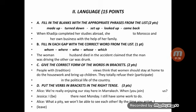Now let's go to the sentence. We have two blank spaces: 'When Khadijah completed her studies abroad — abroad means in another country — she [blank] to Morocco and [blank] her own business with the help of her family.' From context, she came back to Morocco and set up her business.